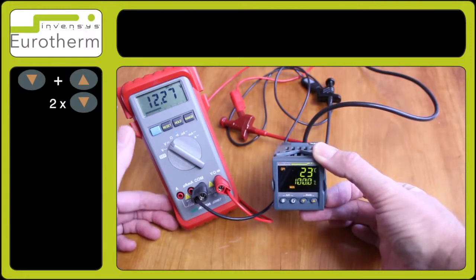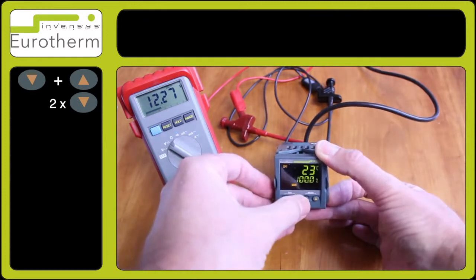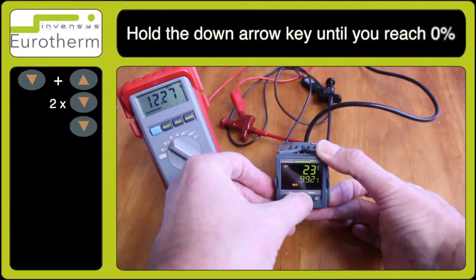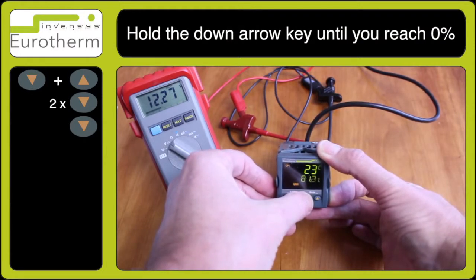Using the down arrow key you can select 0%. Once we're at 0% that's entered, the logic output should reduce to zero.